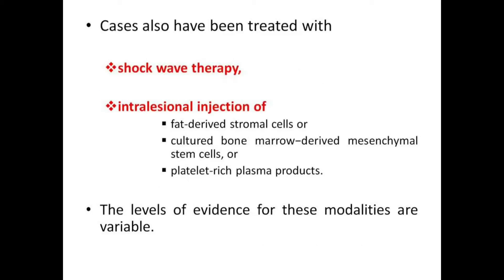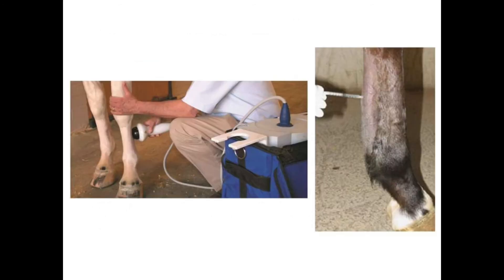Tendon splitting has been recommended, and the rationale is to decrease intratendinous pressure due to serum or hemorrhage. Cases have also been treated with shock wave therapy and intralesional injection of fat-derived stromal cells, cultured bone marrow-derived mesenchymal cells, or platelet-rich plasma products. The level of evidence for these modalities is variable. You can see the picture of shock wave therapy and intralesional injection here.